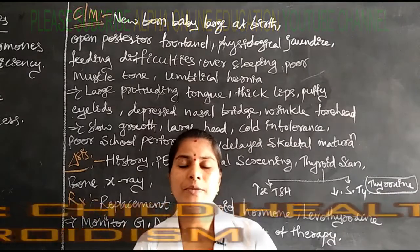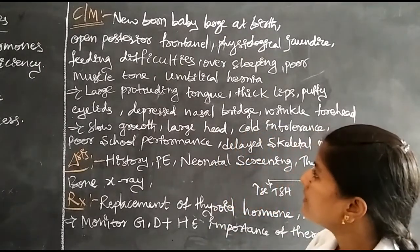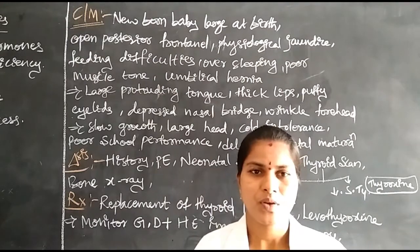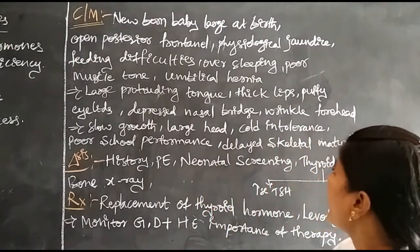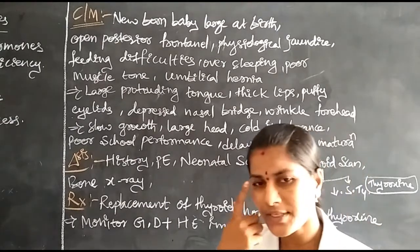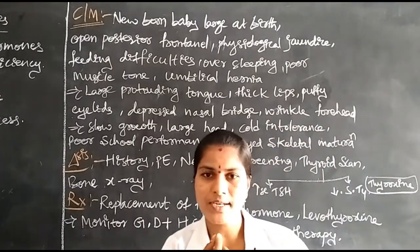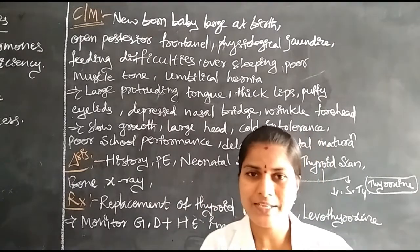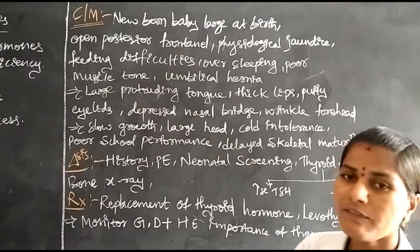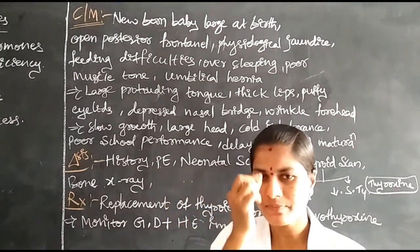Other signs include umbilical hernia, oversleeping, and poor muscle tone. When we assess the newborn baby's muscles, the muscle tone will be very poor. They are continuously oversleeping — deep sleep for 24 hours. The children also have a large tongue with protrusion, very thick lips, and puffiness of the eyelids. The nasal bridge is depressed — a straight nasal bridge is not present. The forehead shows wrinkles and skin folds.